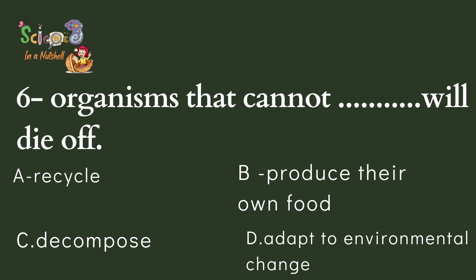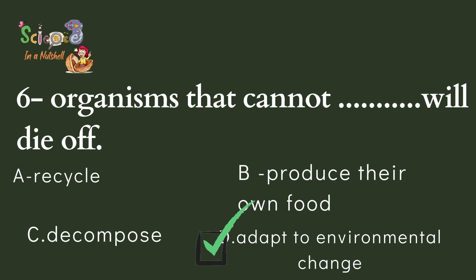Question number six: An organism that cannot do what will die off? Any living organism — if they do not adapt to their environment, they will die and will not be able to survive. Is it recycle, produce, decompose, or adapt to the environmental changes? That's right — if a living organism doesn't adapt to the environmental changes happening around them, they will die.